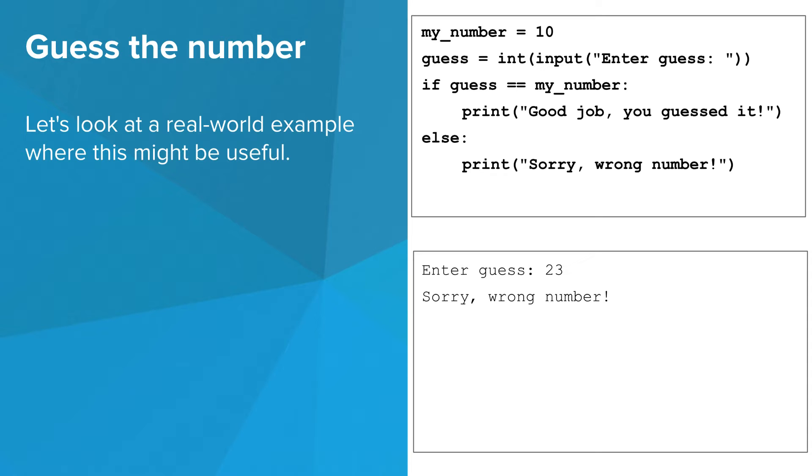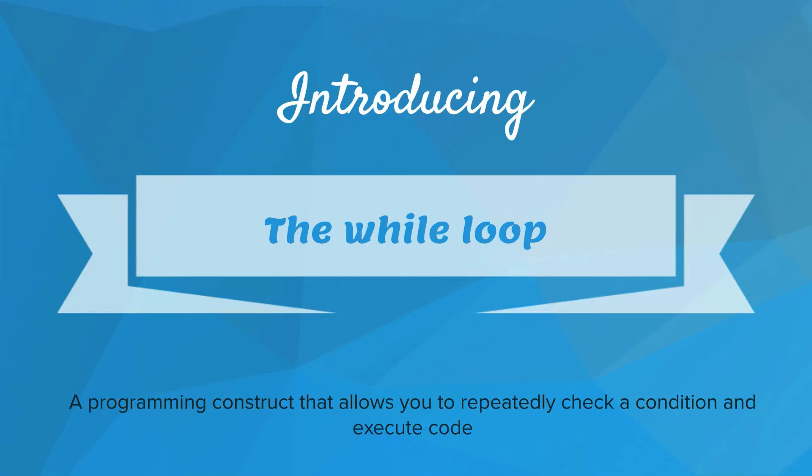Now instead of just giving the user a single guess, what if we want to let the user keep guessing until they guess correctly? We can do that with a while loop. A while loop is a programming construct that allows you to repeatedly check a condition and execute code.